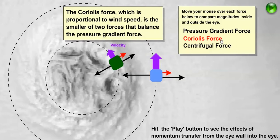Next we have the Coriolis force, which is the smaller of the two forces that are balancing the pressure gradient force. The Coriolis force is proportional to wind speed.